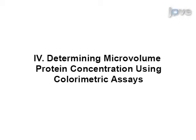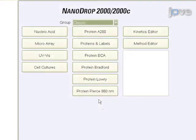If the sample is an uncharacterized protein solution, cell lysate, or crude protein extract, we recommend using one of the pre-configured colorimetric methods available on the Nanodrop 2000C. These colorimetric methods include BCA, Pierce 660, Bradford, and Lowry assays.